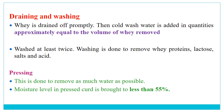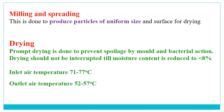The next step is pressing, which is done to remove as much water as possible after washing — just like making paneer. The moisture level in pressed curd is brought to less than 55%. Then milling is done to produce particles of uniform size and surface area for drying.